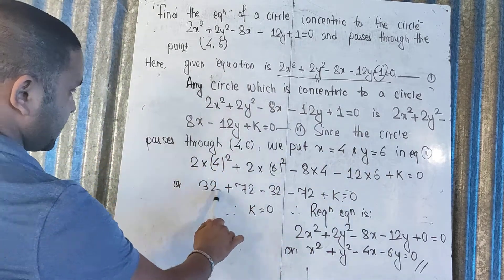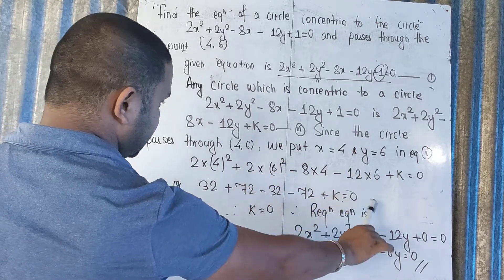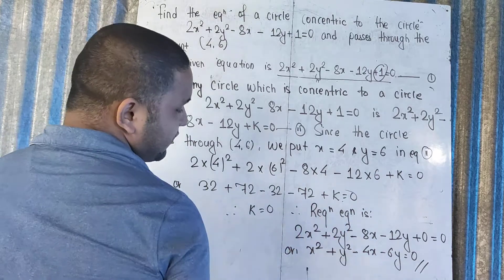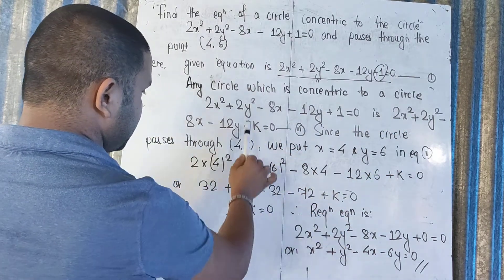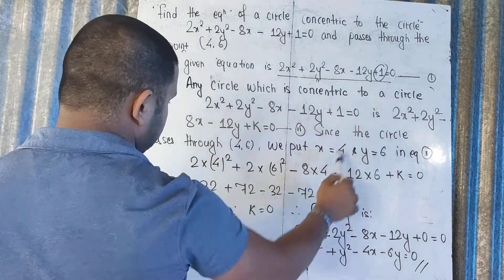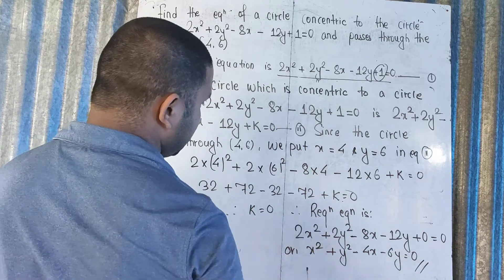So we have 2x² + 2y² - 8x - 12y + k = 0. Since the circle passes through (4, 6), we put x = 4 and y = 6.